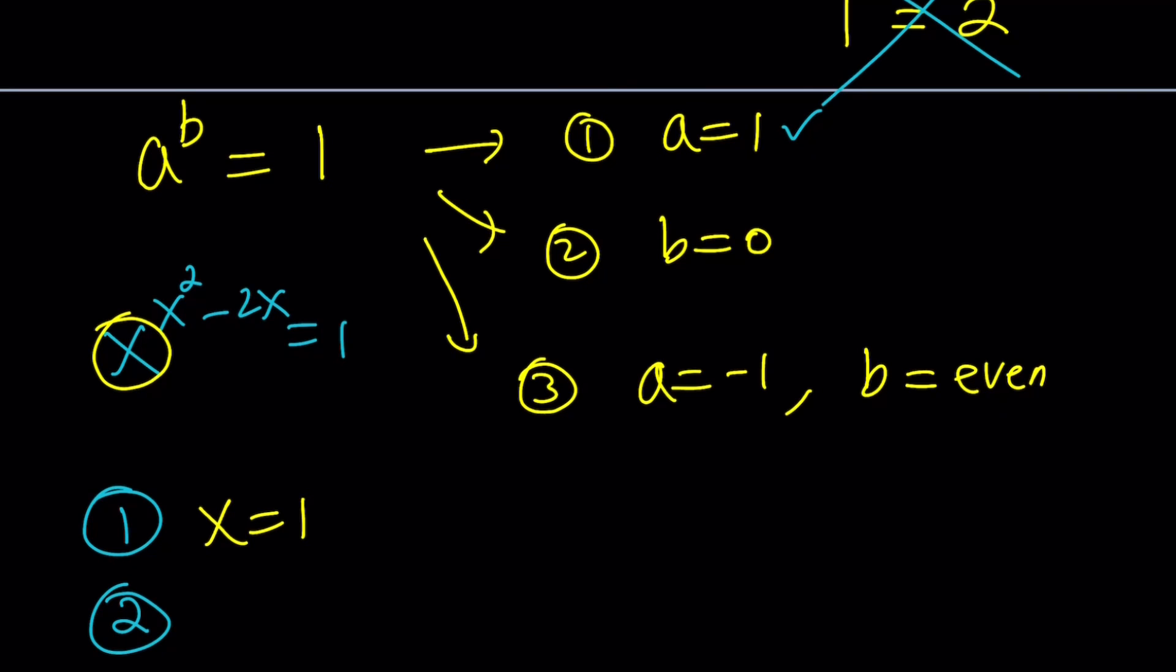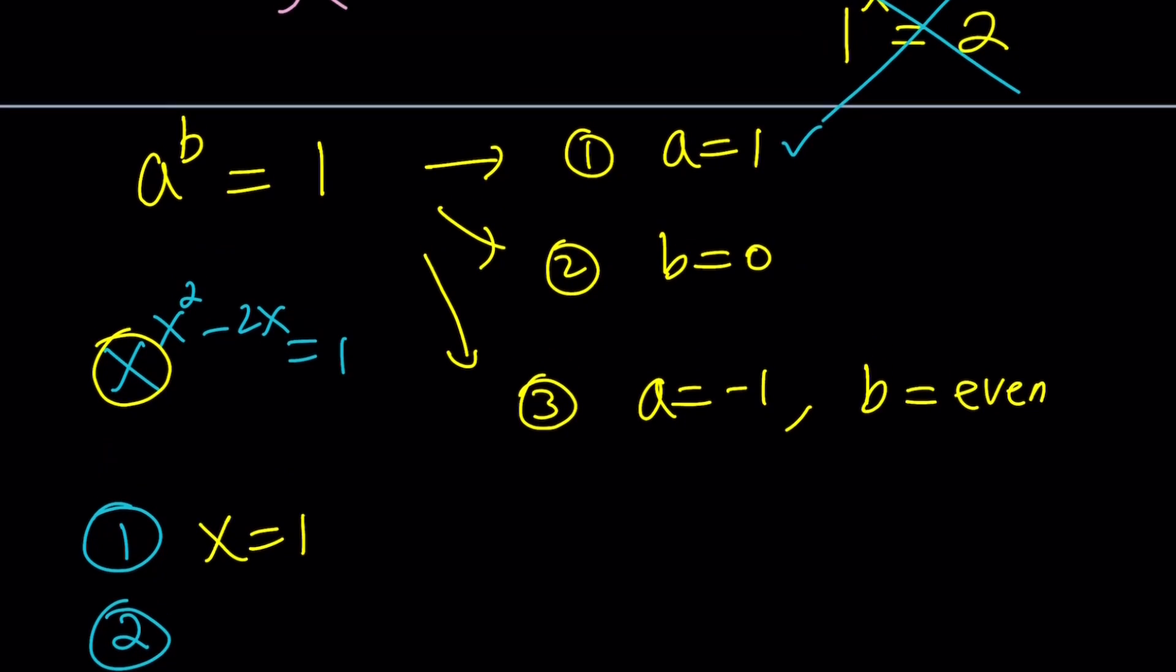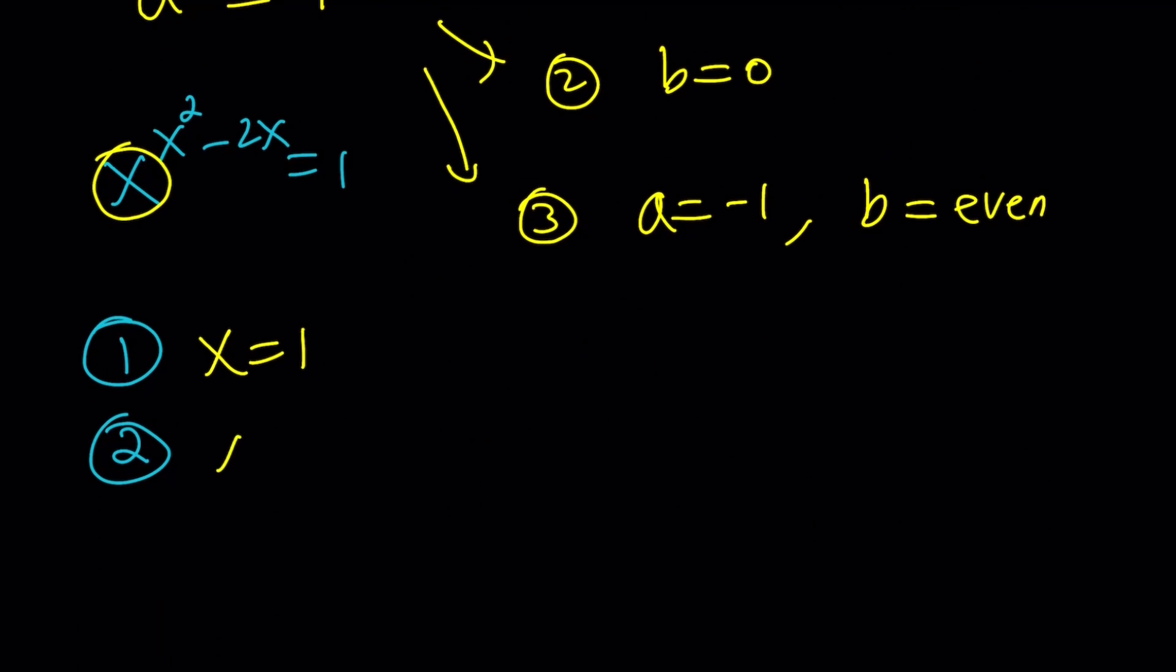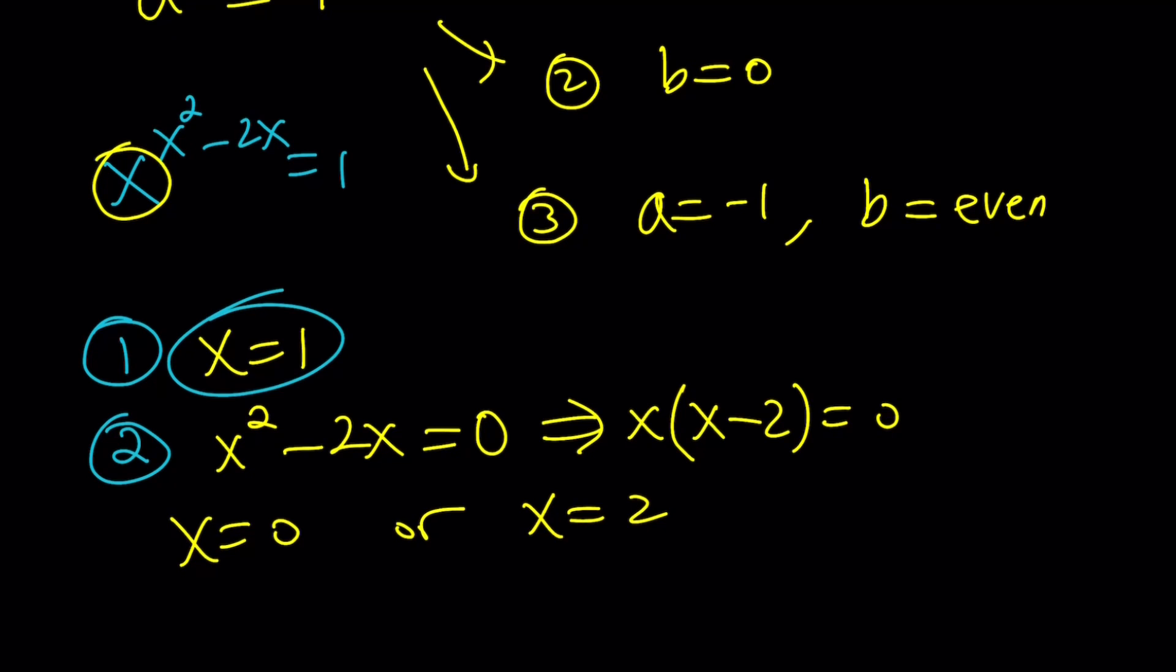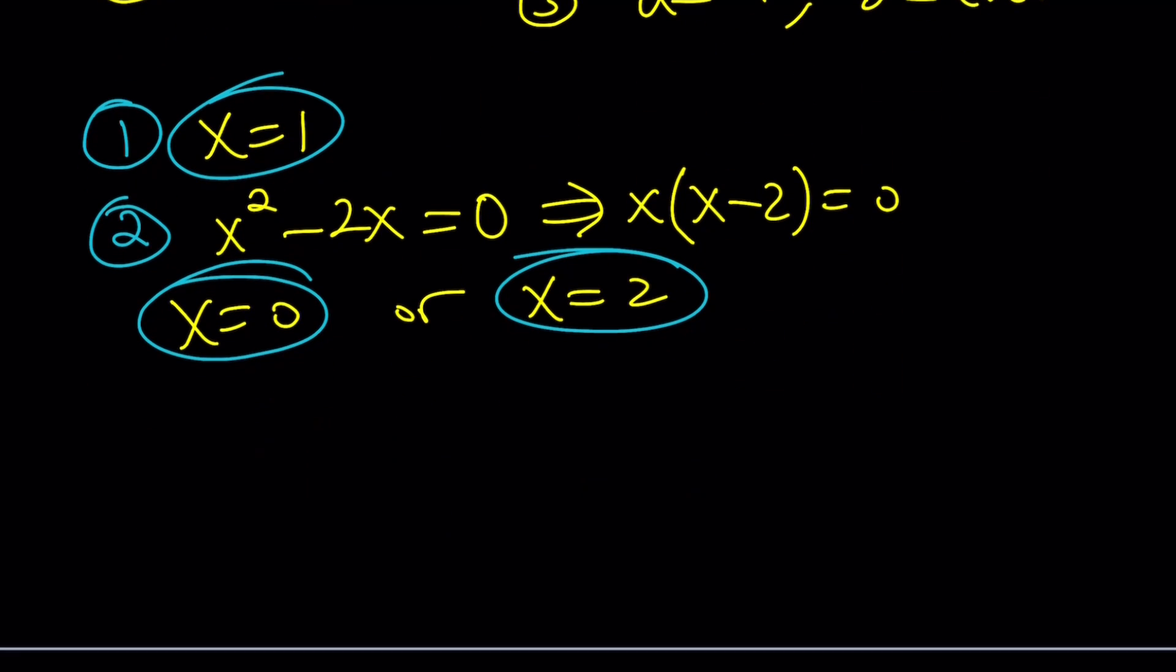If the second case is b equals 0, what is b? b is the exponent. So, I want x squared minus 2x to be 0, just like before. And in this case, I have the factoring, and this means x equals 0 or x equals 2. So far, we've got three solutions. And nothing problematic, because if you have a negative base, which is not an integer, that could be a problem, but we don't have that.